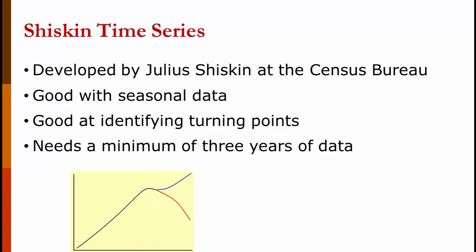Schegen Time Series was developed by Julia Schegen at the U.S. Census Bureau. And it addresses a common problem in forecasting. If you look at the graph on the screen, it goes up and up, and then it flattens out. From that point, it could go down the red line, or it could go up the blue line. If it goes down, it's called a turning point. If it goes back up again, it's called a saddle point. These turning points are very difficult to spot with most forecasting techniques. Regression, in particular, does a really poor job of spotting them. That's the advantage of Schegen Time Series. It is great at spotting these turning points. But it does need a minimum of three years' worth of data.